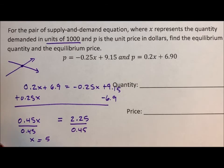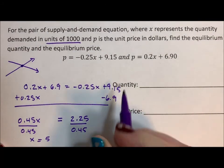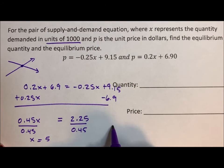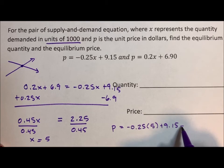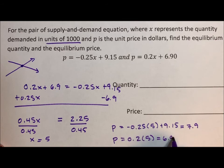Now, before I start writing my answers in, I'm going to double check to make sure this works. I'm going to put the 5 into both equations. So I'm going to say p is equal to negative 0.25 times 5 plus 9.15 and that's going to equal 7.9. And then I'm going to put it into the other equation. p equals 0.2 times 5 plus 6.9 and I get 7.9 out. So that checks out.